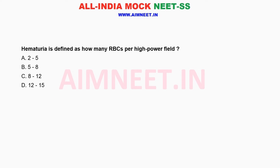Hematuria is defined as how many RBCs per high power field? A. 2 to 5. B. 5 to 8. C. 8 to 12. D. 12 to 15. What do you think is the correct answer? You can comment.